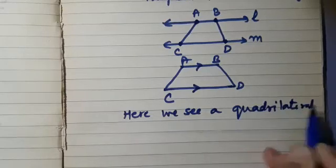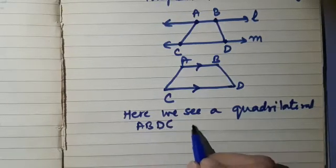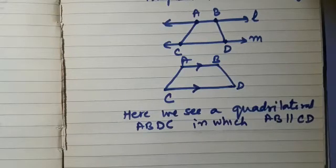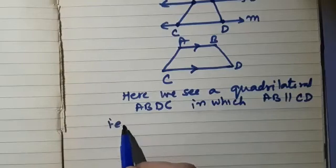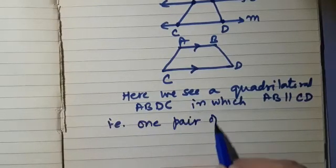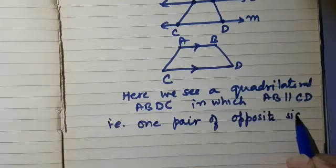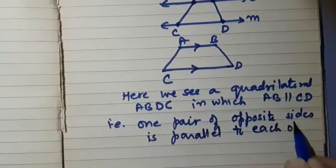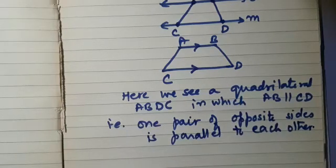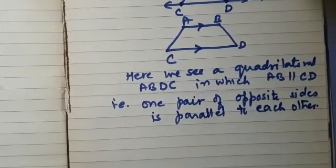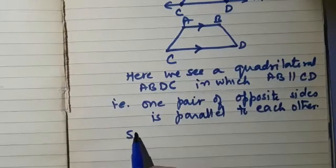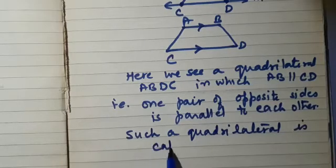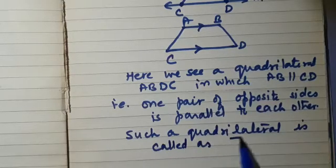This is a special quadrilateral ABDC in which AB is parallel to CD. We can say that one pair of opposite sides is parallel to each other. There is a special name for such quadrilaterals in which one pair of opposite sides is parallel — in mathematics we call it a trapezium.